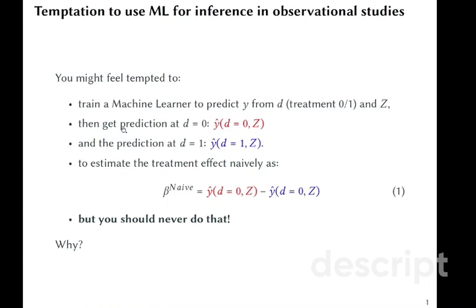So we get the prediction at d equal to 0, ŷ(d = 0, z), and then we get the prediction at d equal to 1. We use the same machine learning once, get two predictions, and we estimate our treatment effect naively by simply deducting one prediction from another. And we should never do that.